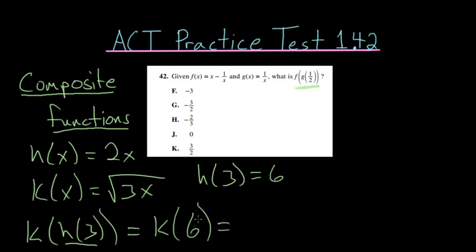And now we'll plug this 6 in for x inside this function k of x. And doing that we have the square root of 3 times 6, which is 18. And if you wanted, you could simplify this because this is 9 times 2, and 9 has a whole number square root. So this would simplify to 3 times the square root of 2.